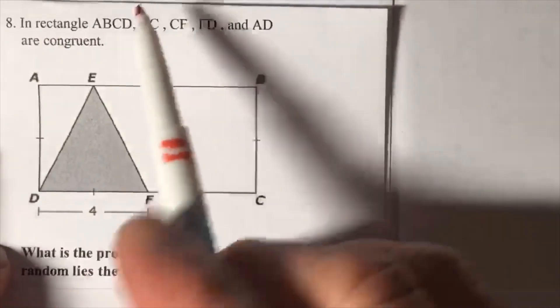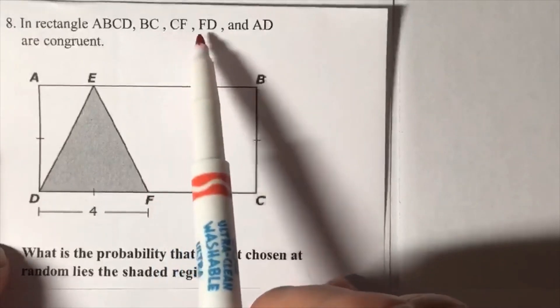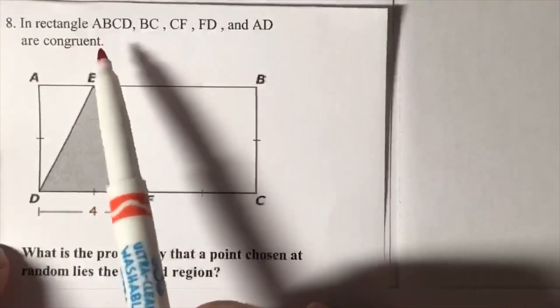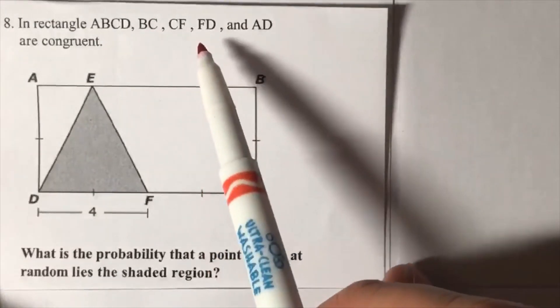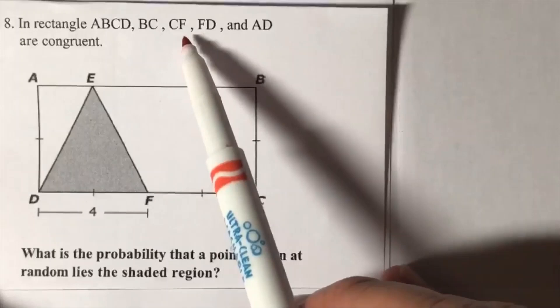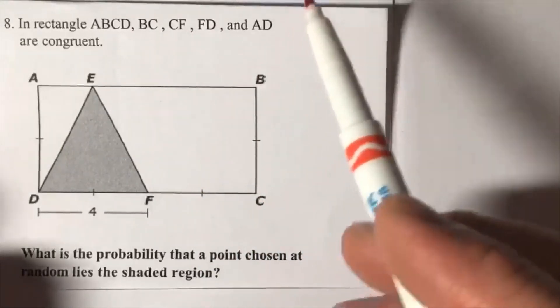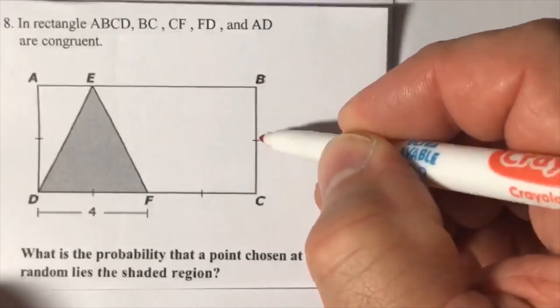In rectangle ABCD, BC, CF, FD, and AD are congruent, so BC equals CF which equals FD, and all three of those equal AD. These little markings on the diagram tell you this.